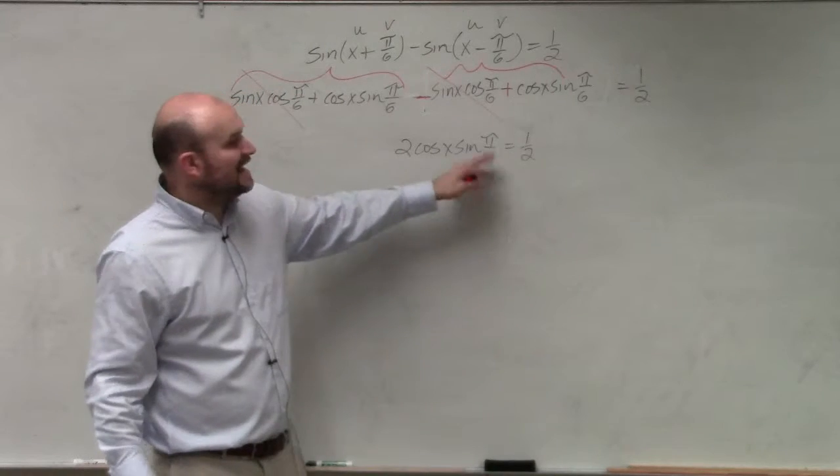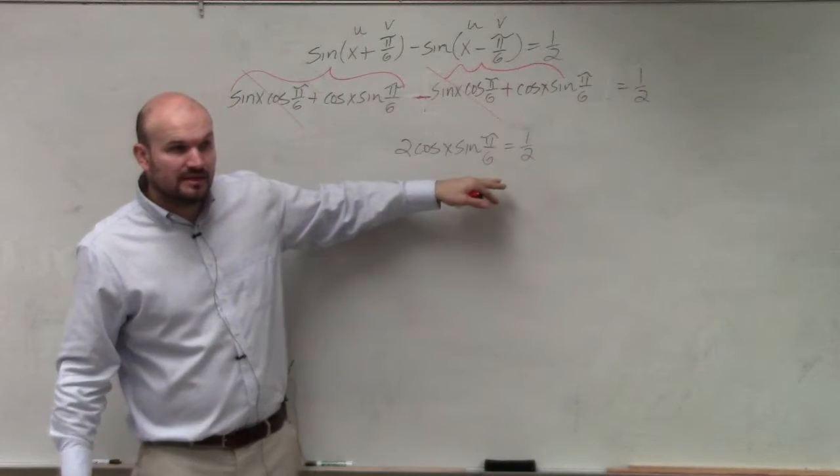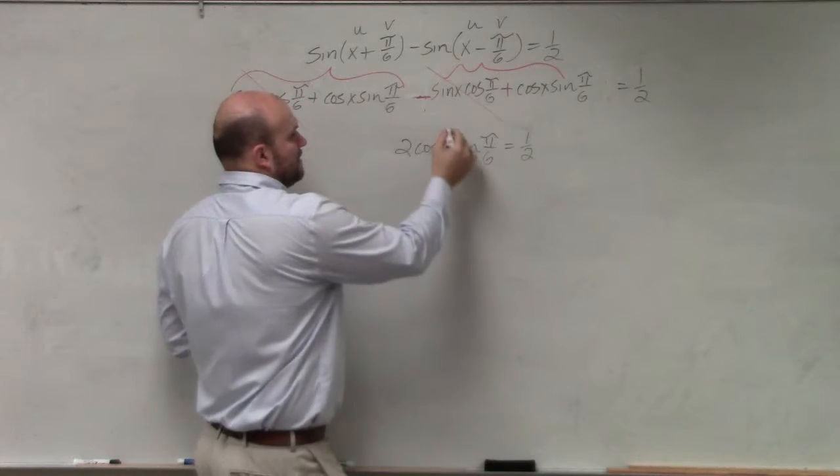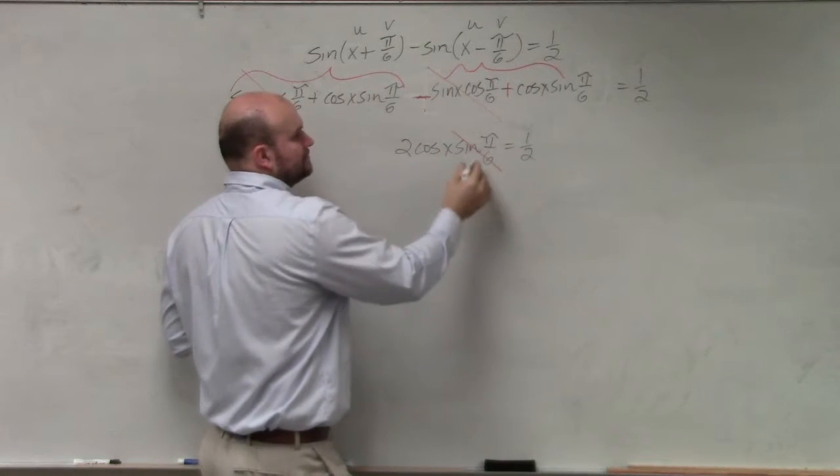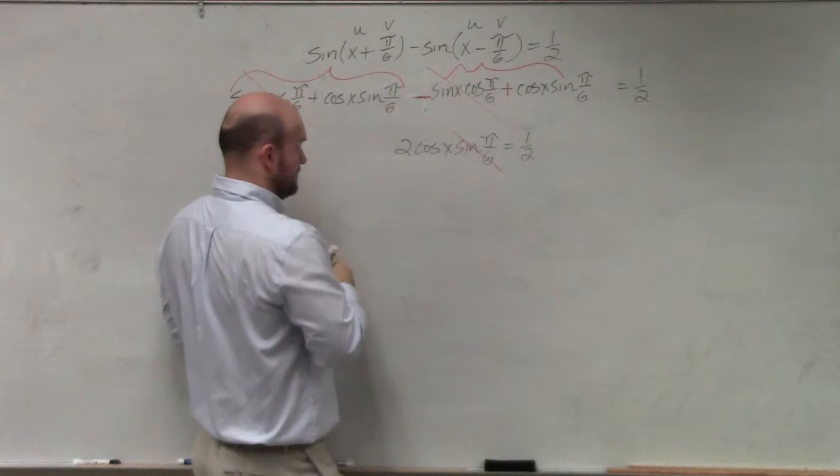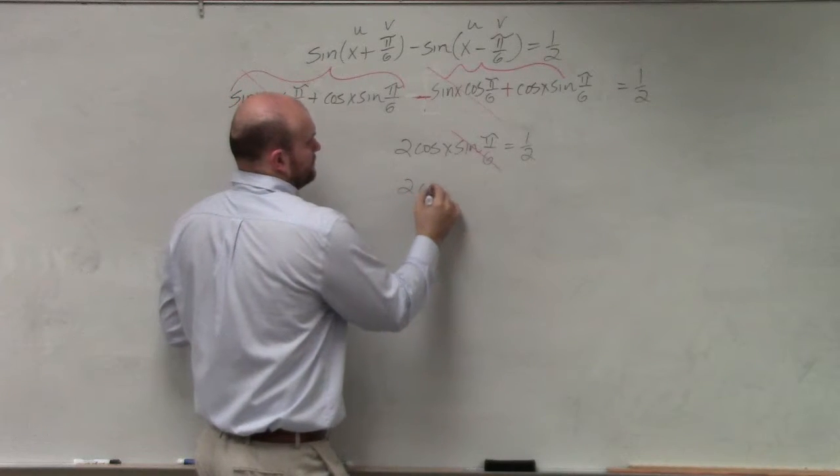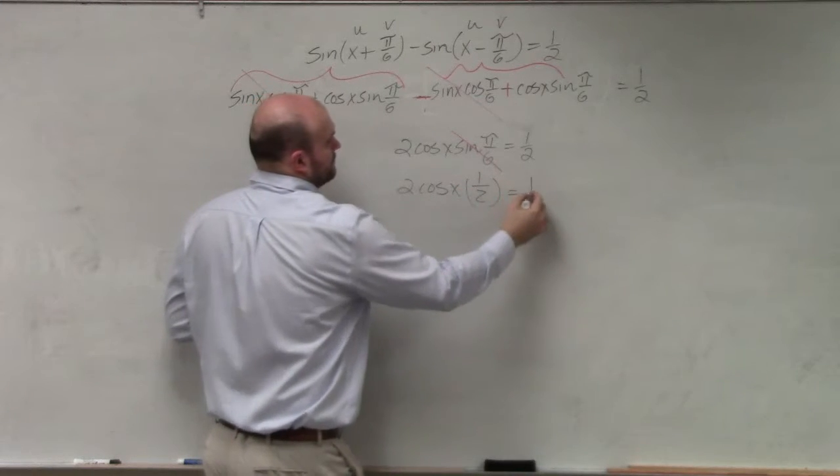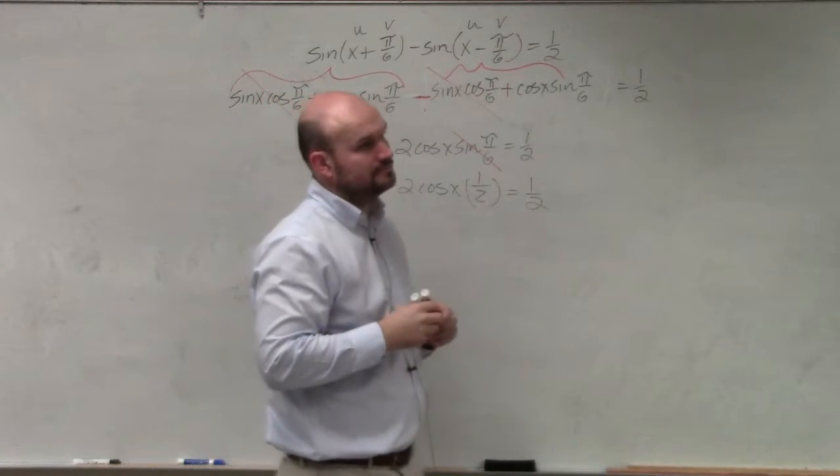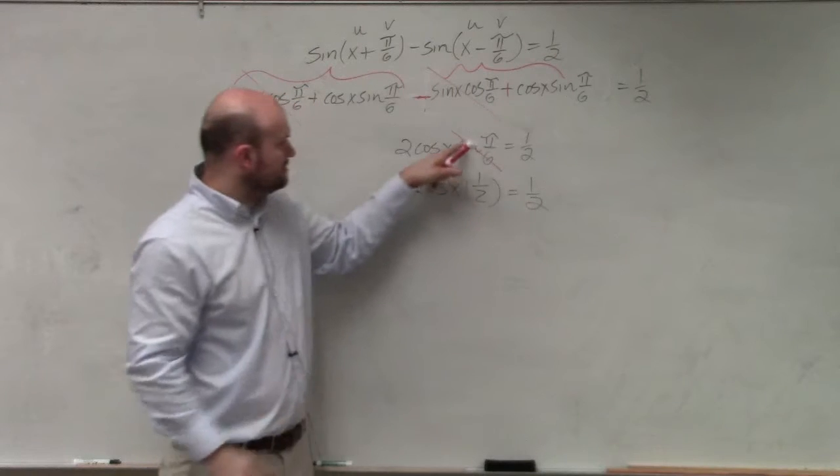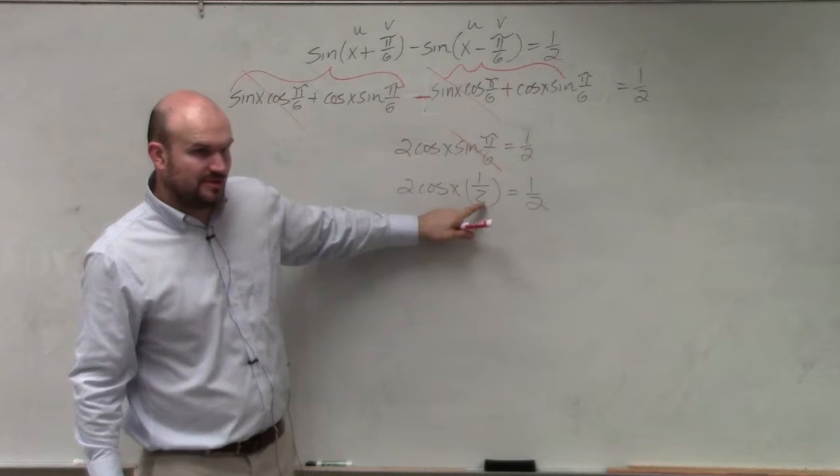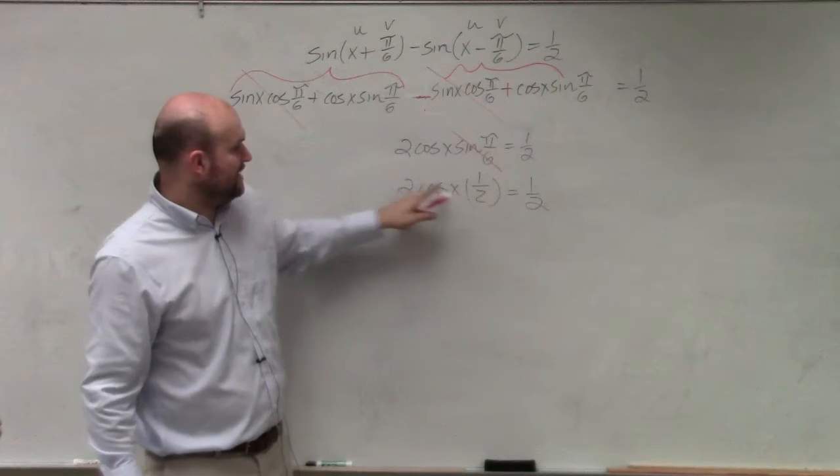Now the sine of pi over 6 is 1 half. Look at the unit circle. So now what's 1 half times 2?